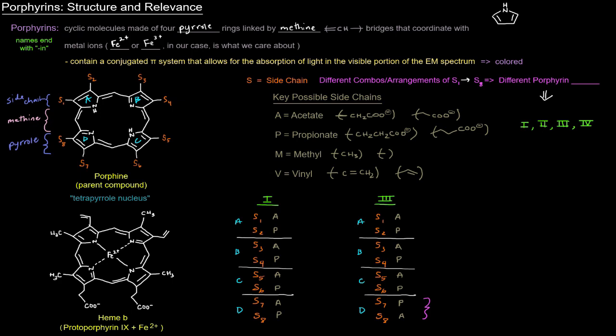Different combinations or arrangements of the side chains on the tetrapyrrole nucleus give you different porphyrin types, and there are four key types: one, two, three, and four. With type I porphyrins, you have an alternating A and P pattern. Starting from S1 you go A, P, A, P, A, P, A, P all the way around. If that's the case, then you've got a type I porphyrin.